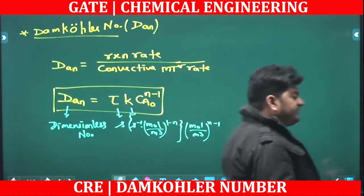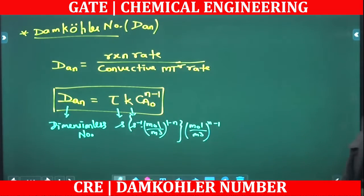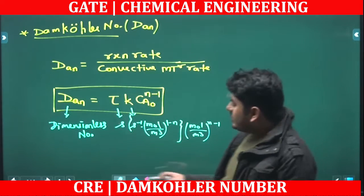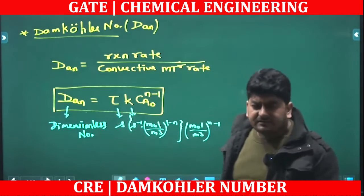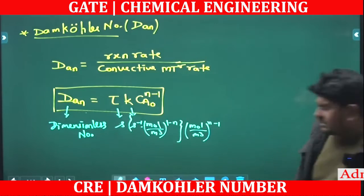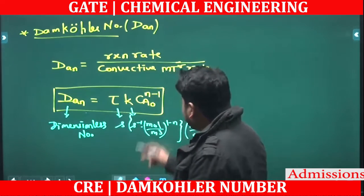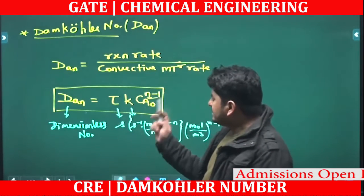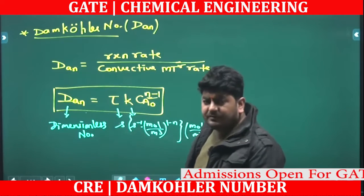The significance of the Damköhler number is that it signifies the conversion. In any flow reactor, if we know the Damköhler number, we can calculate its conversion directly — we don't need any other parameter. For different orders of reactions, the Damköhler number will be different.